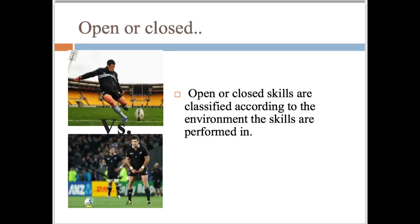Open or closed skills are classified according to the environment the skills are performed in. A closed skill is performed in an environment which has minimal change. The performer is in complete control of the skill with very few external factors interfering with the performance. An example of a closed skill shows Dan Carter practicing a place kick in an empty stadium.